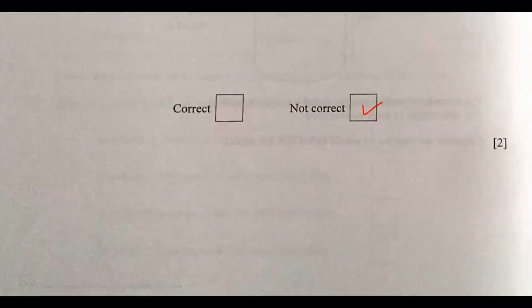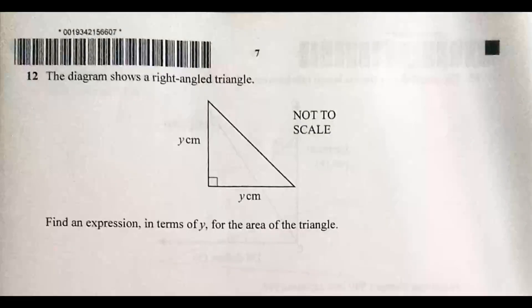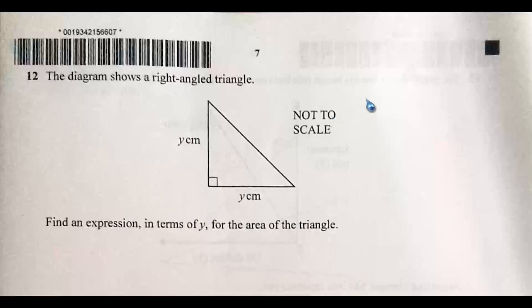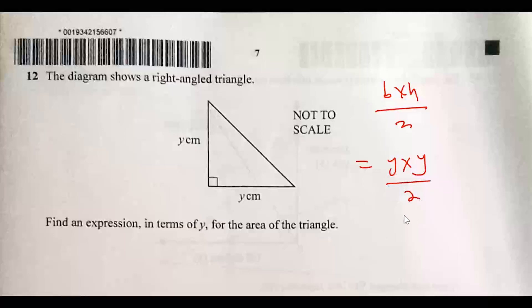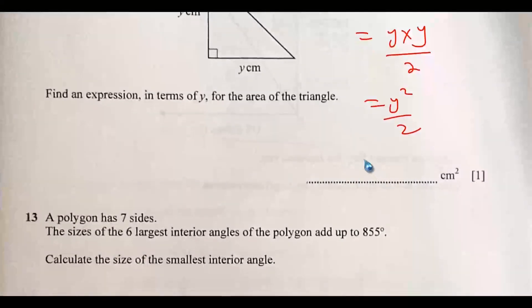Question 12: The diagram shows a right-angled triangle. Find an expression in terms of y for the area of the triangle. The area of a triangle is base times height divided by two. In this case the base is y and the height is y, so the area is y squared over two.